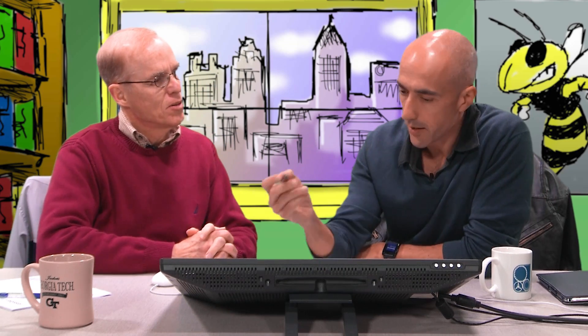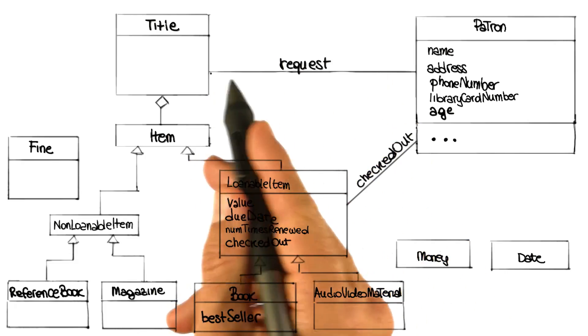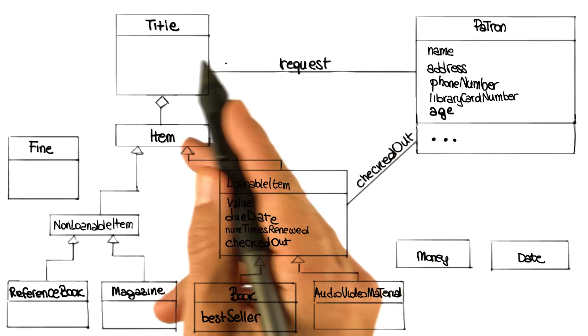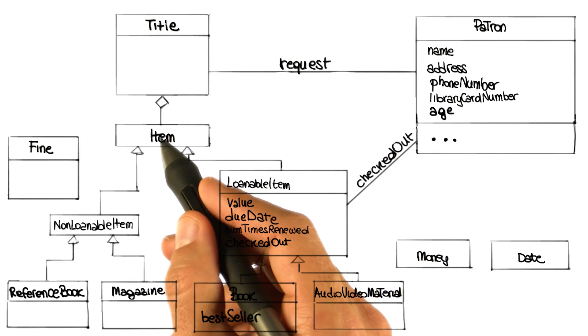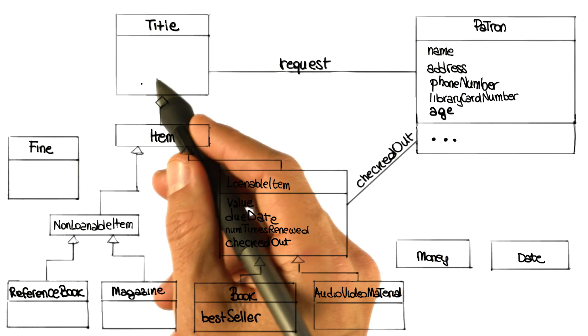And so we can move our request line up from Loanable Item to Title, because that's what they're really requesting. Definitely — that represents exactly the situation you were mentioning. When the patron makes a request, it makes a request to a Title and not to a Loanable Item. And then when the actual loan takes place, that will be connected to a specific item.